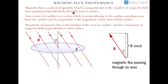If we are given two different surfaces and the number of field lines passing through surface one is greater than surface two, then we can say that magnetic flux is directly proportional to the number of field lines passing perpendicularly through a surface. Hence the magnetic flux of surface one would be greater than the magnetic flux of surface two.